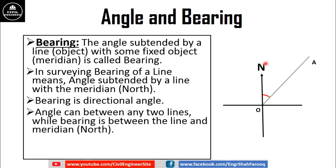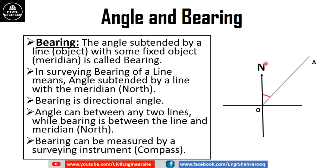To differentiate between angle and bearing, we can say that angle can be between any two lines, while bearing is the angle subtended by a line with north or meridian. Bearing of a line can be measured by a surveying instrument known as compass. Thank you very much for watching the video.